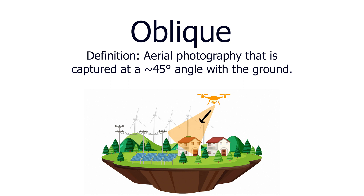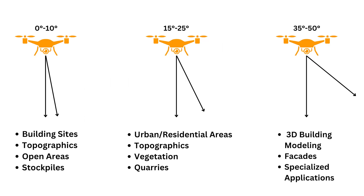For best practices, zero to ten degrees is best used for taking images of building sites, topographics, open areas, and stockpiles. 15 to 25 degrees is for urban and residential areas, topographics, some vegetation, and quarries. 35 to 50 degrees is used for 3D modeling of buildings, facades, and specialized applications.